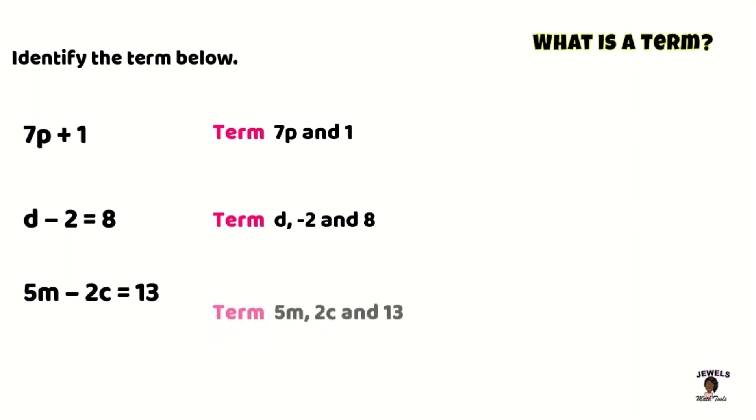And in this last one, our terms are 5m, negative 2c, and 13. These are all the parts which make up your equations and your expressions.